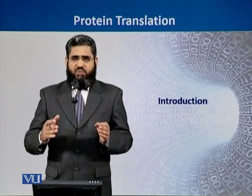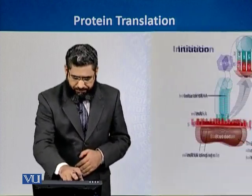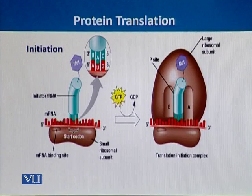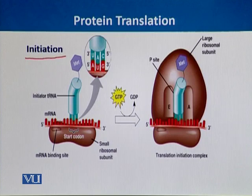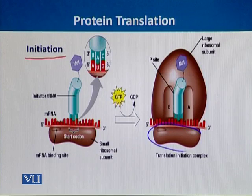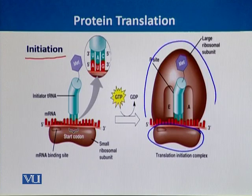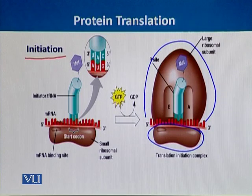We will see the process of protein translation in detail. Protein synthesis or protein translation can be divided into three parts. The first part is the initiation. Protein synthesis takes place in ribosomes, which are divided into two subunits — a smaller subunit and a larger subunit. When these two subunits combine together, with the help of some other proteins, they collectively form the initiation complex.